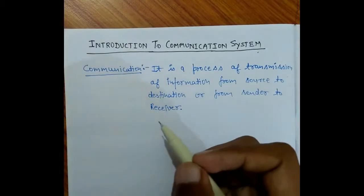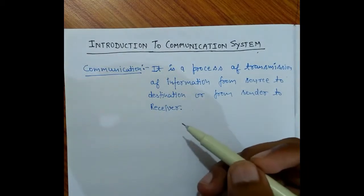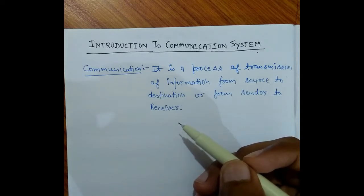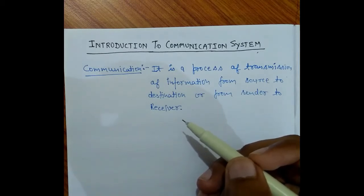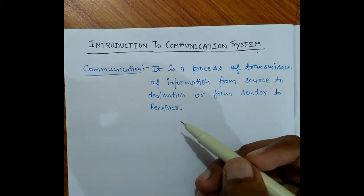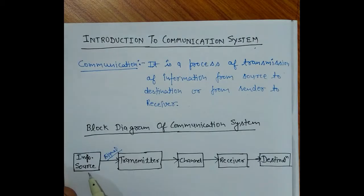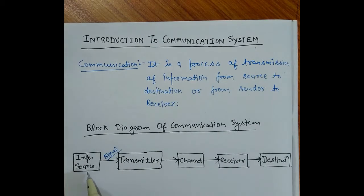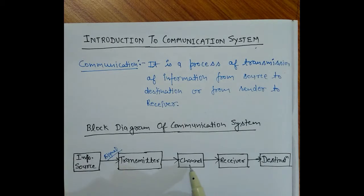For example, if you have a video lecture, you can communicate. Communication is an exchange between two persons. This is the block diagram of a communication system. The first block is source, then the second block is transmitter, then channel, then receiver, then destination.